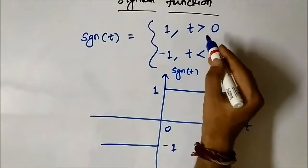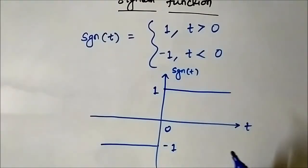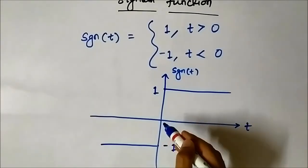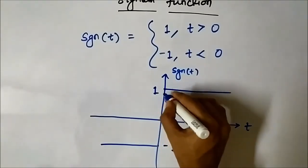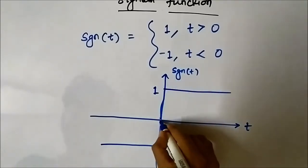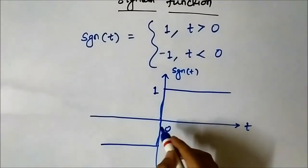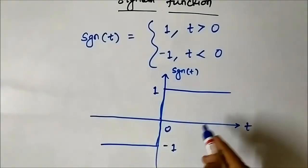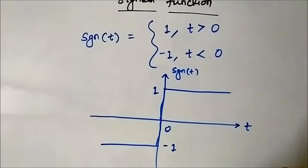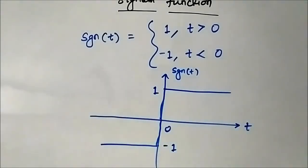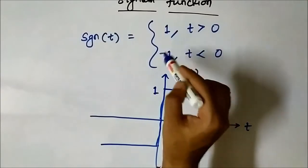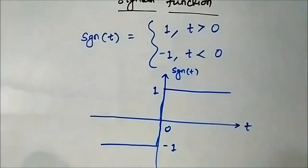There can be some confusion related to what is the value of the signal at t equals 0. Basically, there is a discontinuous jump here from 0 to 1, because the time interval from where the value changes from 0 to any value greater than 0 is very difficult to measure. This is the representation you will find in most textbooks: equal to 1 for positive time and minus 1 for negative time.